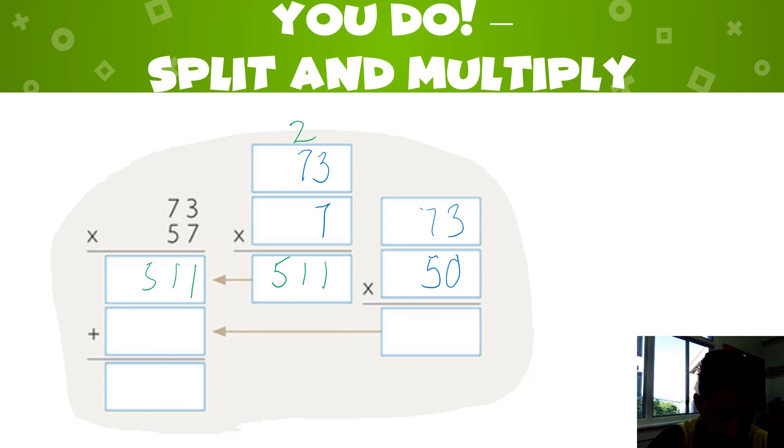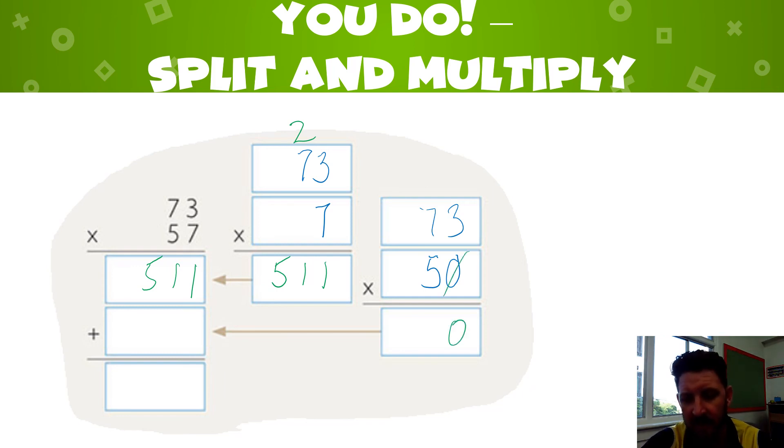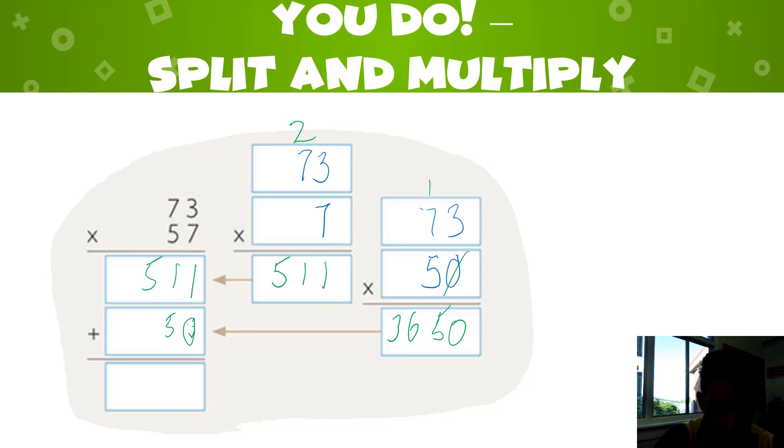I come over to now my 73 times 50. I'm going to cross out my zero, remember we use our rule. I might even add it over here. I put in my smiley face just for those people who love the old happy zero. 5 times 3 is 15, 5 times 7 is 35, add 1 more is 36. And I've got my answer.